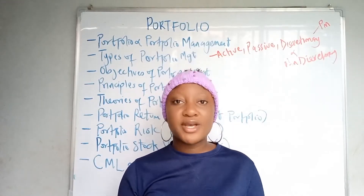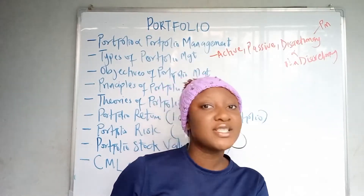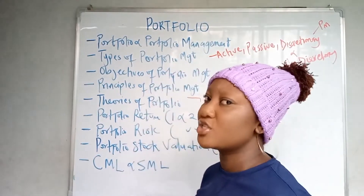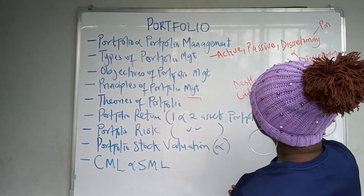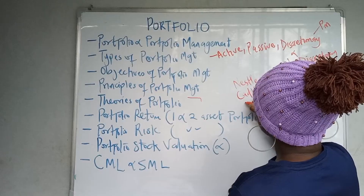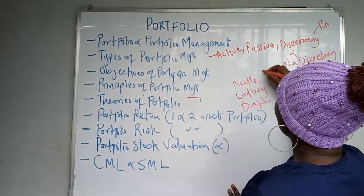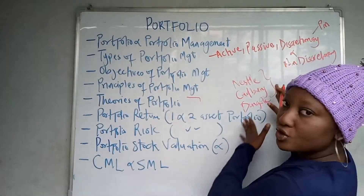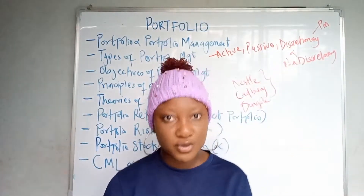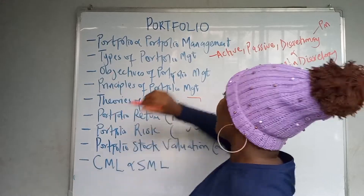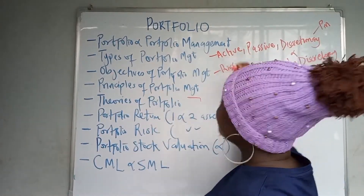You can be an investor and have a portfolio containing different kinds of investments. For example, you can buy shares in Nestle, shares in Cadbury, shares in Dangote — all of these different shares together form your own portfolio.